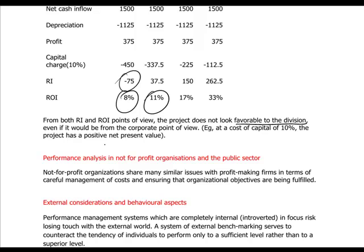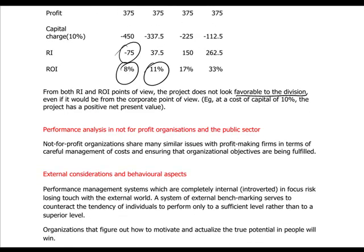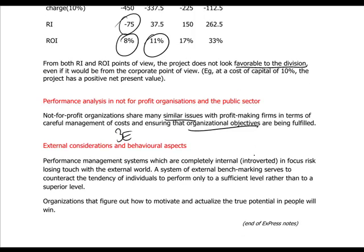This will be the focus of exam questions on this topic. In not-for-profit organisations and public sectors there are similar issues to profit-making companies, and careful management of costs and achievement of objectives must be fulfilled. Remember the three E's: economy — acquiring resources at the lowest possible prices; efficiency — using resources in the most efficient way, getting the most outputs from given inputs or using as few inputs as possible for a given level of output; and effectiveness — simply reaching the organisational objectives. Based on these, we can analyse the performance of not-for-profit organisations.